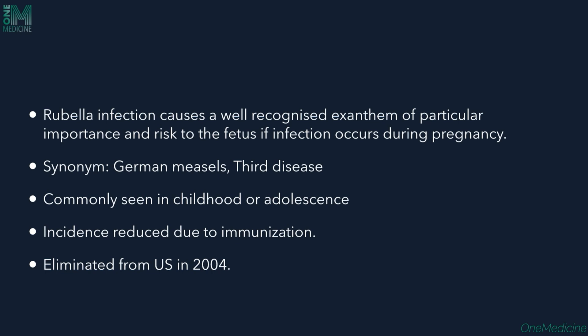The synonyms for rubella would be German measles, and it is also called the third disease. Rubella is most commonly seen in childhood and adolescence. The incidence has been reduced these days because of immunization — the measles, mumps, rubella (MMR) vaccine — so the number of cases have reduced.